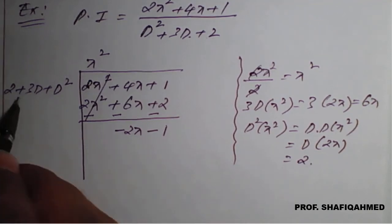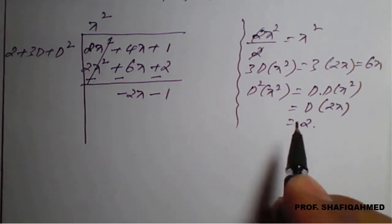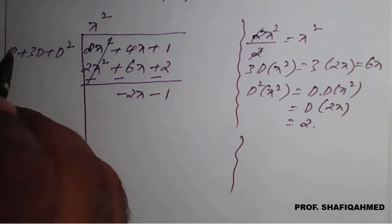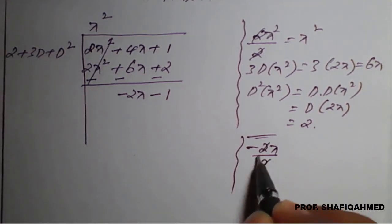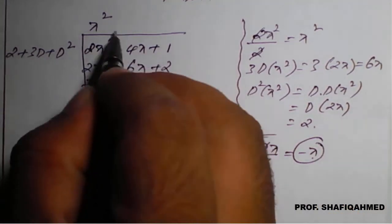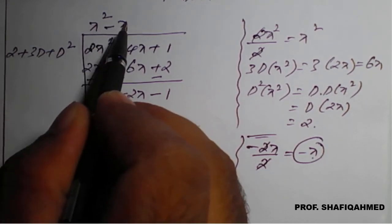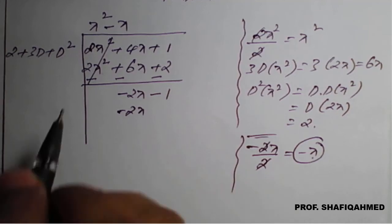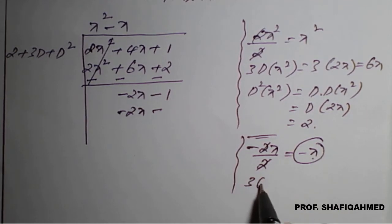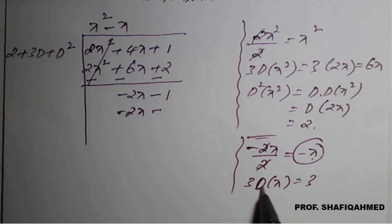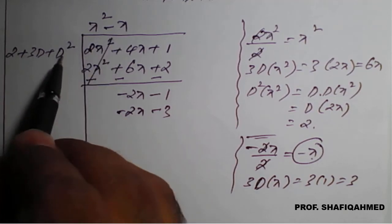Again we have a polynomial −2x − 1. The first term of the new dividend divided by the first term of the divisor: −2x divided by 2, which gives −x. Write −x in the quotient. Now multiply −x by the divisor: 2 × (−x) = −2x. Then 3 times differentiation of x — differentiation of x is 1, so that gives −3. Then double differentiation of x.